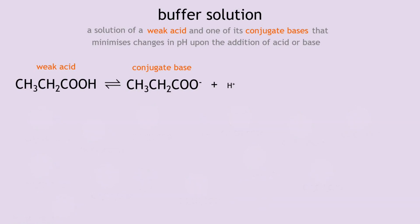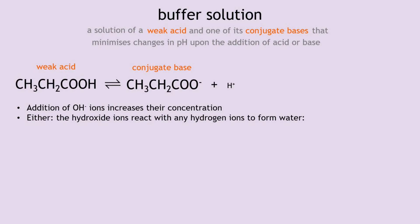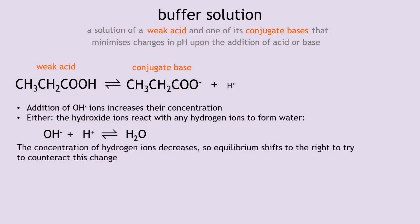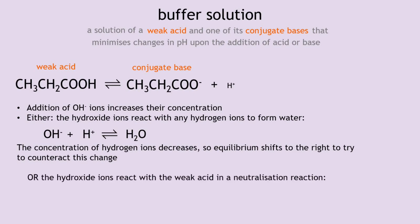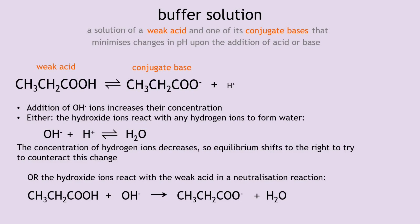Using Le Chatelier's principle to explain this: the addition of OH⁻ ions increases their concentration. Either the hydroxide ions react with hydrogen ions to form water — decreasing hydrogen ion concentration — so the equilibrium shifts to the right to try to reform the lost hydrogen ions. Or the hydroxide ions react with the weak acid in a neutralization reaction. In both cases, a change in pH has been resisted. That is how a buffer solution works.